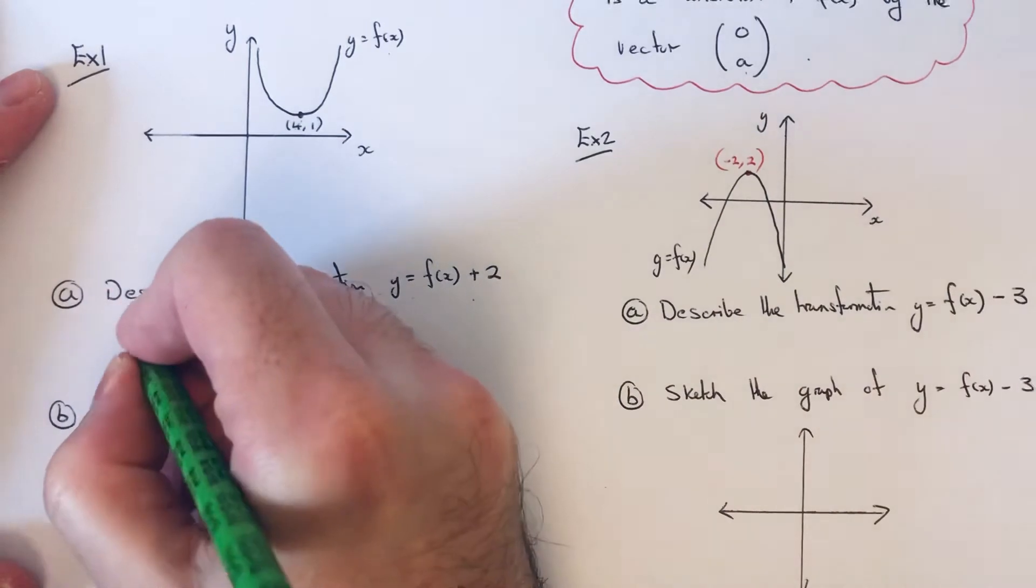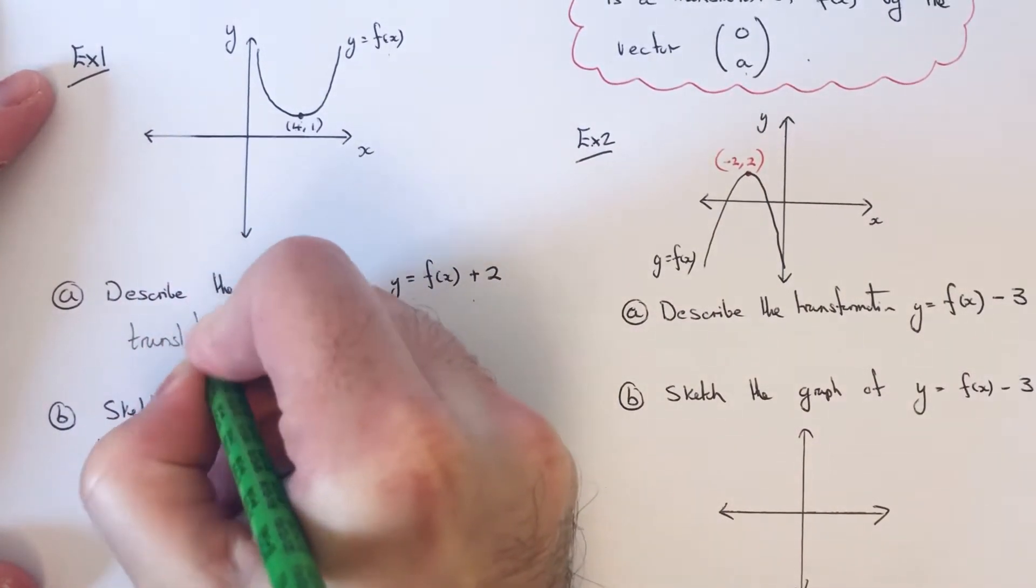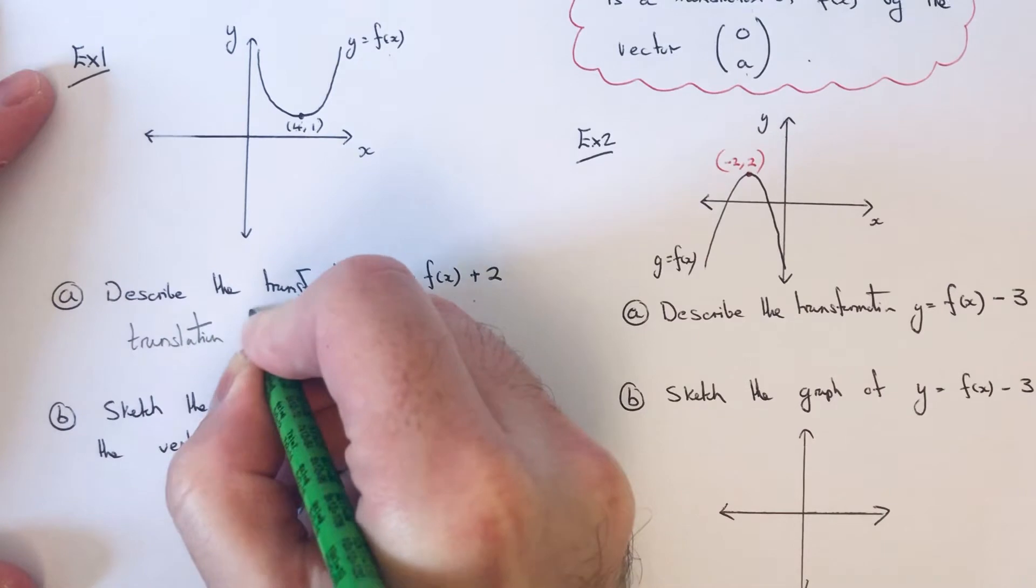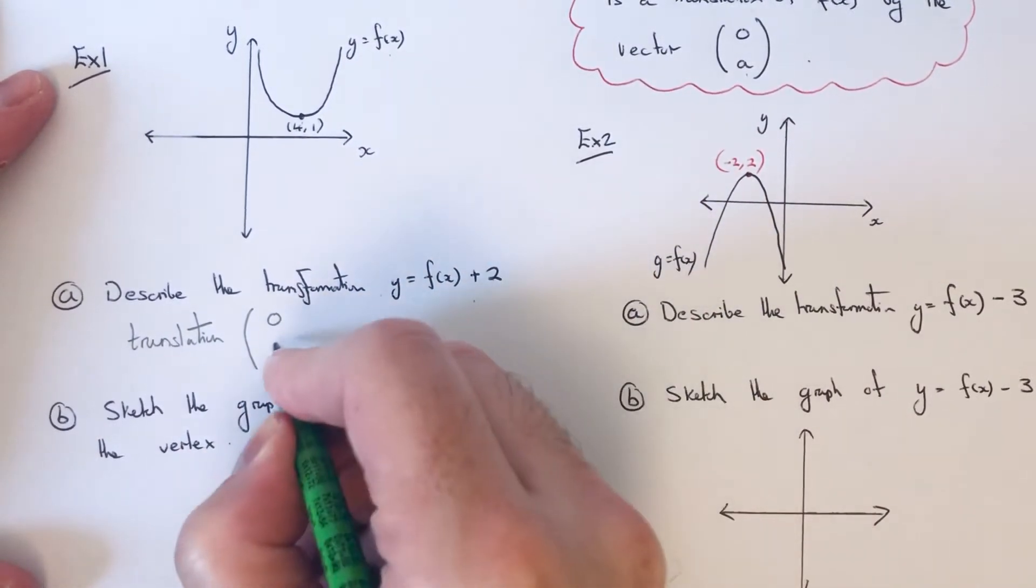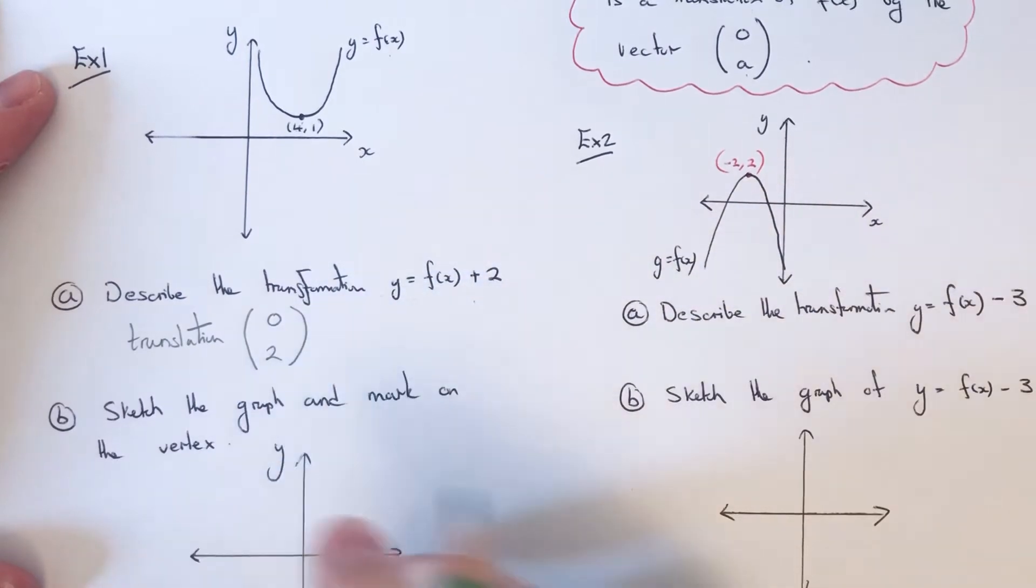So our transformation will be a translation. And our vector for the translation will be 0 and we put the 2 at the bottom there.